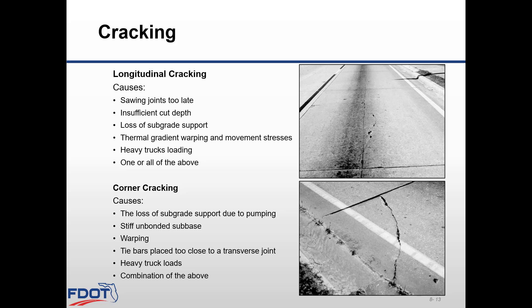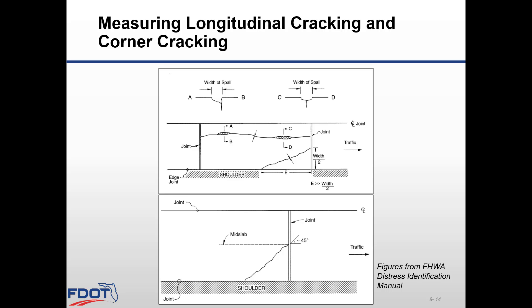Heavy truck loading can also cause longitudinal cracking — it could be one or all of the above. For corner cracking, causes include loss of subgrade support due to pumping, stiff unbonded subbase, warping, tie bars placed too close to a transfer joint, and heavy truck loads. The top graphic shows how to measure longitudinal cracking and width of spalls; the bottom graphic shows corner cracking, per the FHWA Distress Identification Manual.